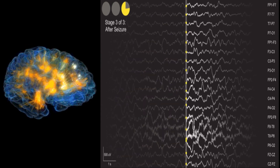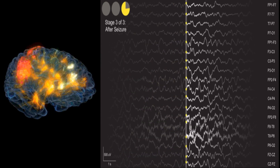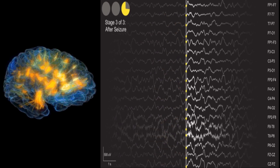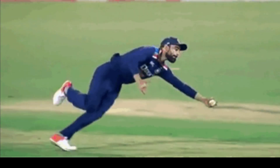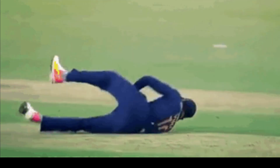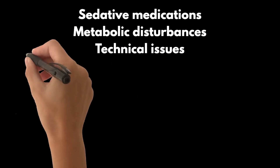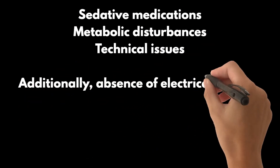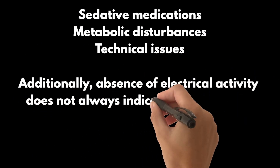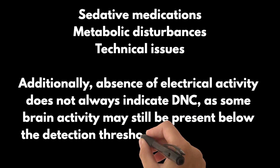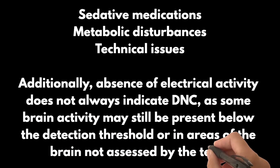These tests measure the electrical activity of the brain. In the context of DNC, they can provide evidence of the absence of brain function. An isoelectric EEG or absent EP supports the diagnosis of DNC. But here's the catch: EEG and EP may be affected by various factors such as sedative medications, metabolic disturbances, and technical issues. Additionally, absence of electrical activity does not always indicate DNC, as some brain activity may still be present below the detection threshold or in areas of the brain not assessed by the tests.